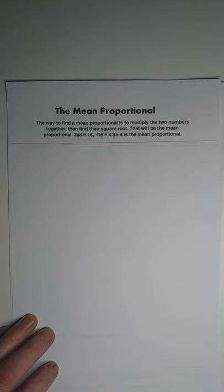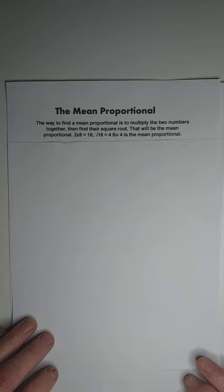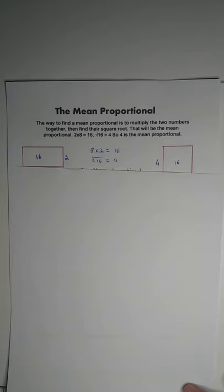The mean proportional. The way to find the mean proportion is multiply two numbers together and find the square root. That'll be the mean proportion. So if 2 by 8 is 16, the square root of 16 is 4, so 4 is the mean proportional.